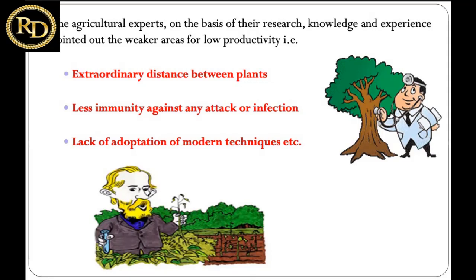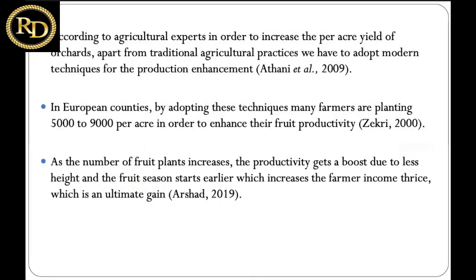Other weaknesses include less immunity against several diseases and infections caused by pests, and the lack of adoption of modern techniques. According to experts, to increase per-hectare yield in orchards, apart from traditional practices, we must adopt modern techniques for production enhancement. In European countries, by adopting these technologies, many farmers are planting around 5,000 to 9,000 trees per acre. As the number of plants increases, productivity gets a boost due to less height, fruit season starts earlier, and farmer income increases threefold.